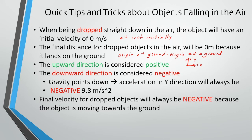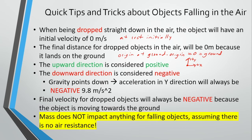Lastly, the final velocity for dropped objects will be negative because the object is moving towards the ground. Most importantly — mass does not impact anything for falling objects, assuming there is no air resistance. So if we drop a bowling ball and a feather at the same time, since they both experience an acceleration of negative 9.8 meters per second squared with no air resistance, they would both hit the ground at the exact same time.